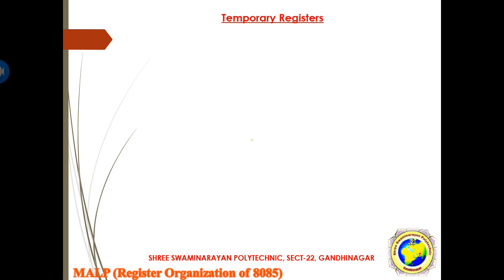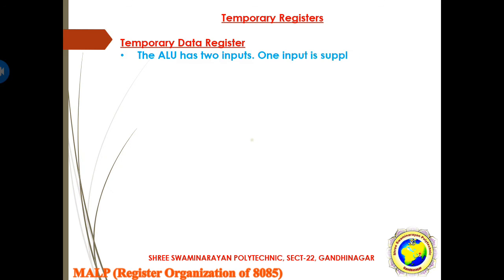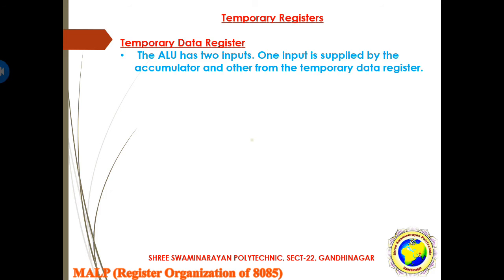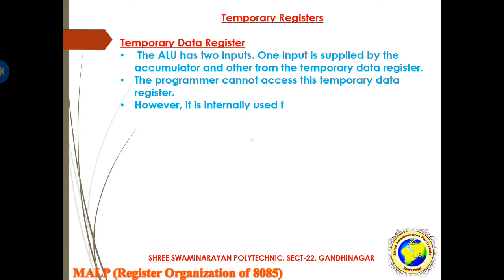The last type is the temporary register. ALU has two inputs: one supplied by the accumulator and another from the temporary data register. So ALU gets two inputs — one from memory through the temporary data register, and one from the accumulator. The programmer cannot access this temporary data register; however, it is internally used for the execution of most arithmetic and logical instructions.